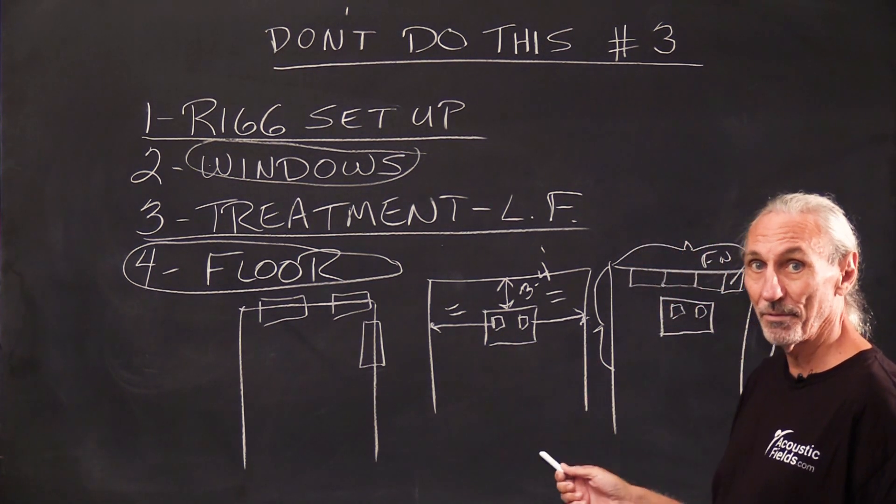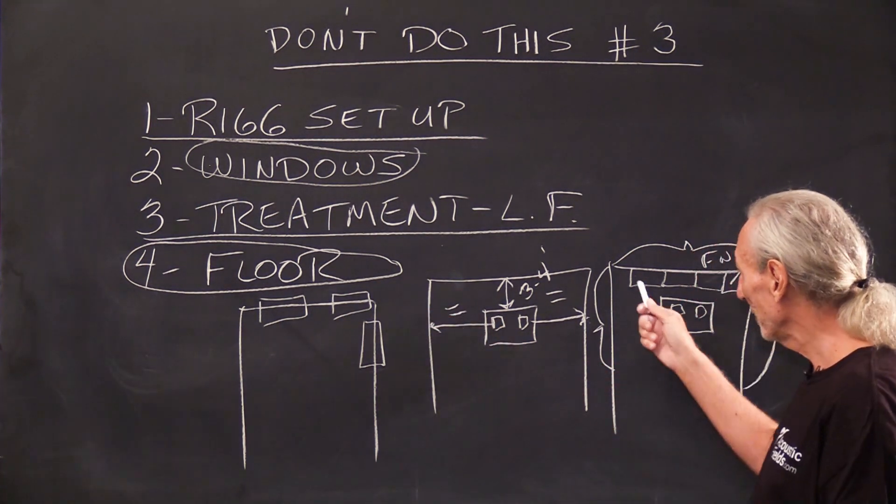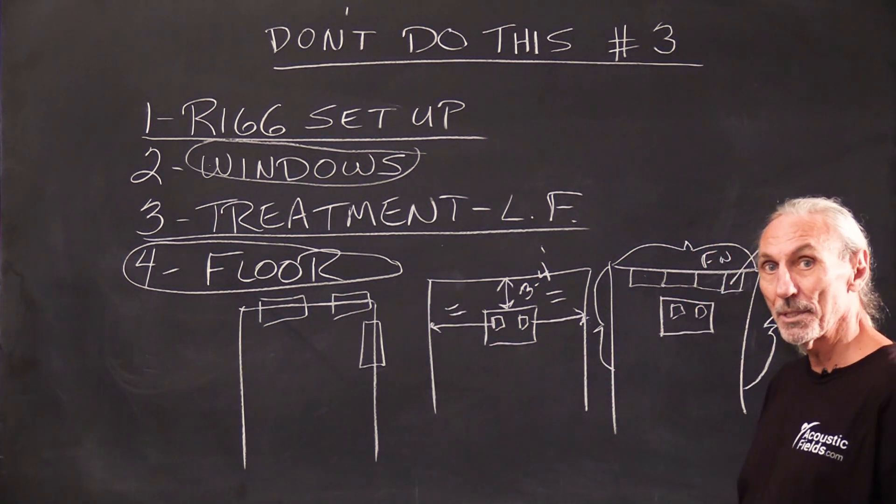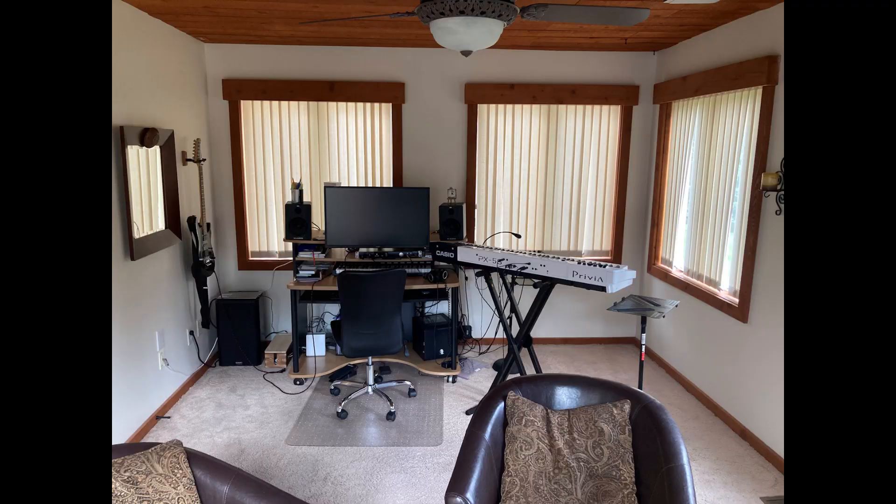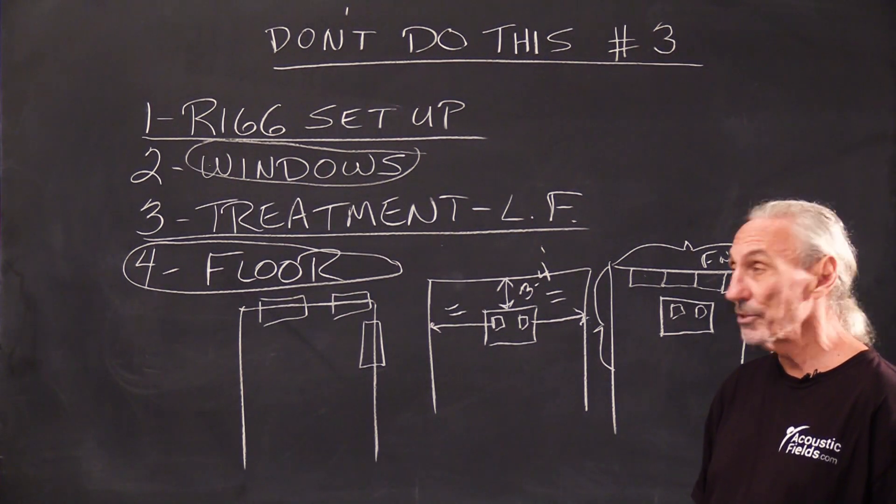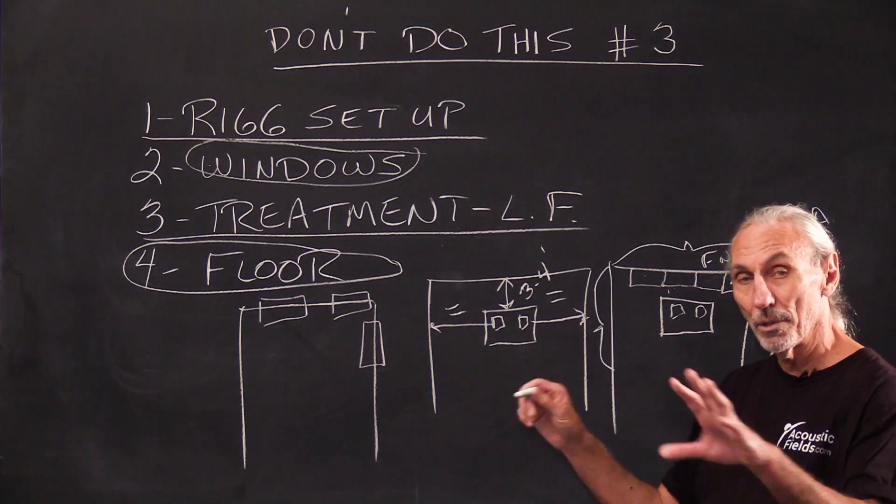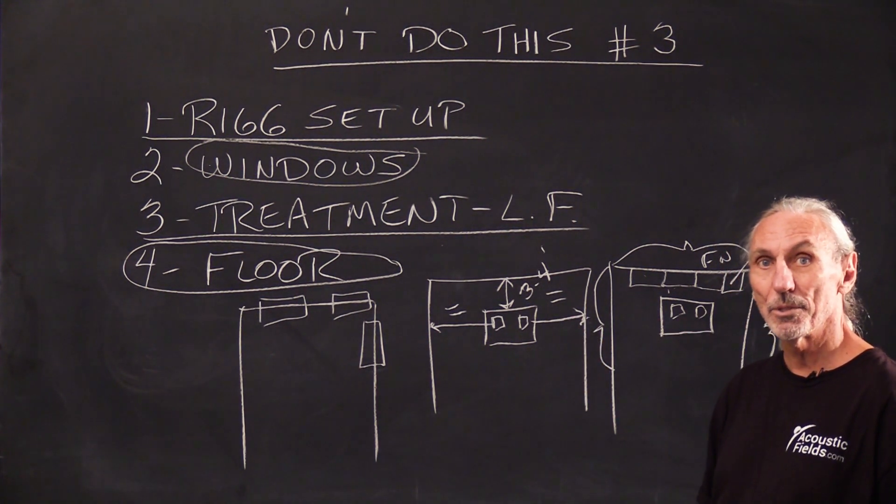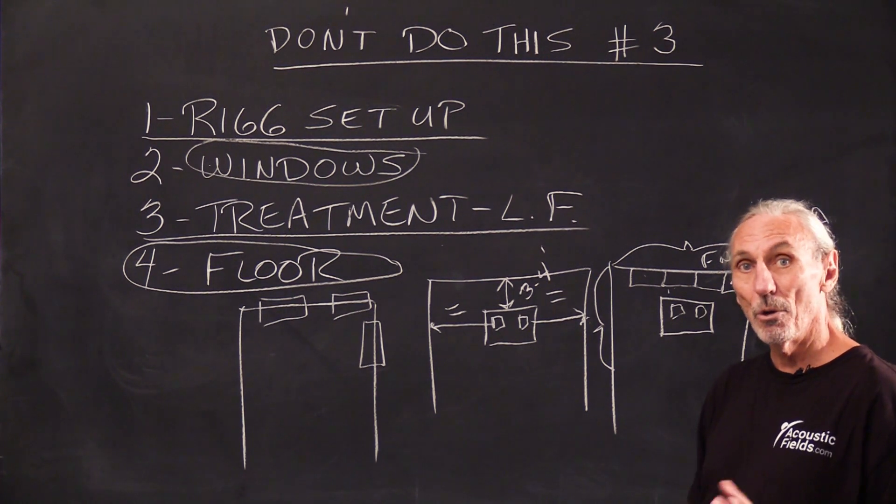But some big rules that we must follow here: equal distances, stay away from the windows obviously, and get some low frequency management treatment in the room. That'll go a long way. Obviously there's instruments in the room so there's composing and stuff going on, so you want to get the room in a position to handle both usages. And you can do that with a variable acoustic format where you roll the units in place when you're mixing and roll them around the instruments when you're recording.